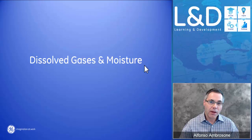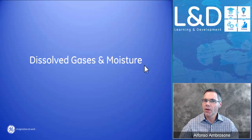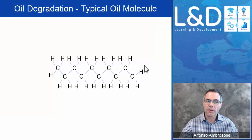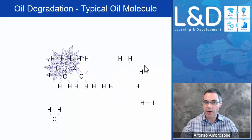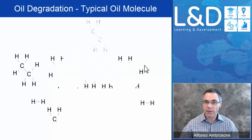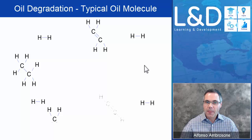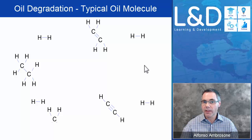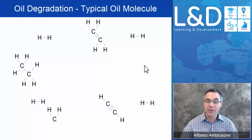Before we talk about the monitors themselves, I want to briefly touch on dissolved gases and moisture, because many people wonder where the gases or moisture actually come from. This is a typical oil molecule. When this oil molecule degrades, it starts to break apart, and as it breaks apart, it produces gases — hydrocarbons: hydrogen, methane, ethylene, and acetylene. There's a lot of hydrogen molecules produced, so hydrogen is the primary gas developed when an oil molecule breaks down.